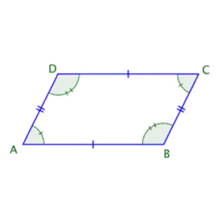Now angles. Here you can see 4 angles: angle A, angle B, angle C, and angle D. The opposite angles are angle A and angle C, and angle B and angle D.